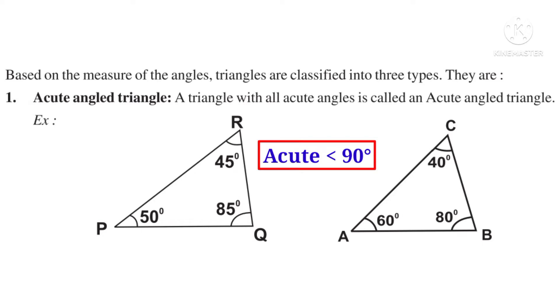In triangle ABC, angle A is 60°, angle B is 80°, angle C is 40°. All are less than 90 degrees, so all are acute angles. Therefore, triangle ABC is an acute angled triangle.